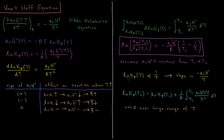What this tells us is that the natural log of the equilibrium constant is proportional to the inverse of the temperature. So if we get the equilibrium constant at a range of different temperatures and plot ln K versus 1/T, the slope of that line is going to be the negative standard enthalpy of reaction divided by R.